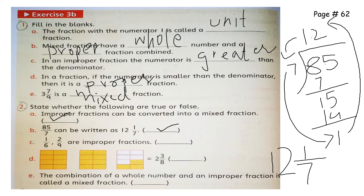Next true/false: 1 by 6 and 2 by 9 are improper fractions. What does improper fraction mean? It means the numerator is bigger than the denominator. But here the numerator is smaller — so this is false.